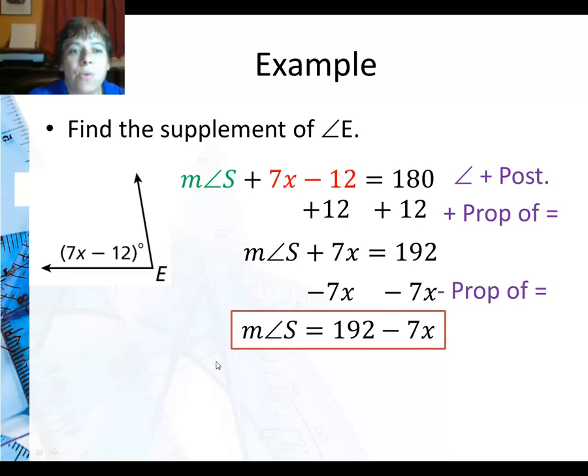So again when I ask you for a supplement but you don't have enough information to find the x, you're going to find really an expression. It's 192 minus 7x for the supplementary angle.